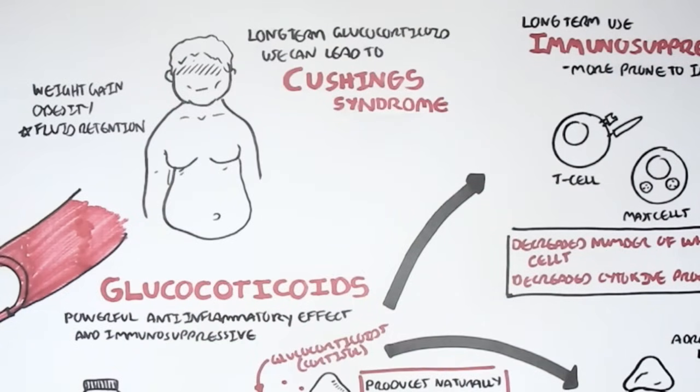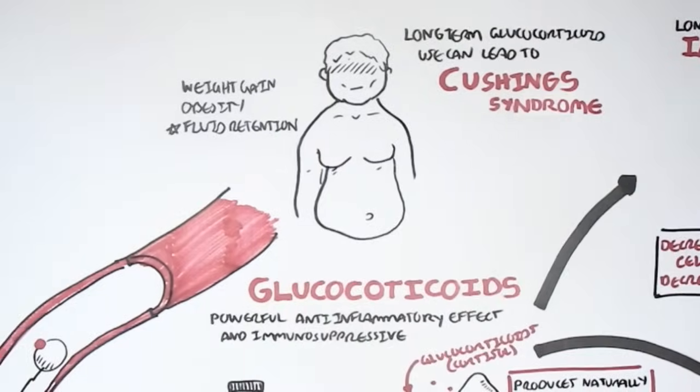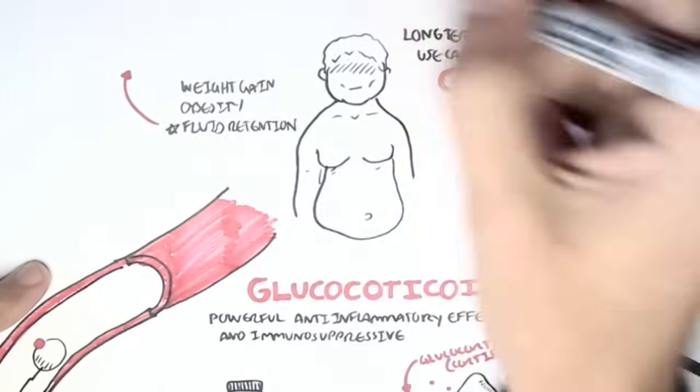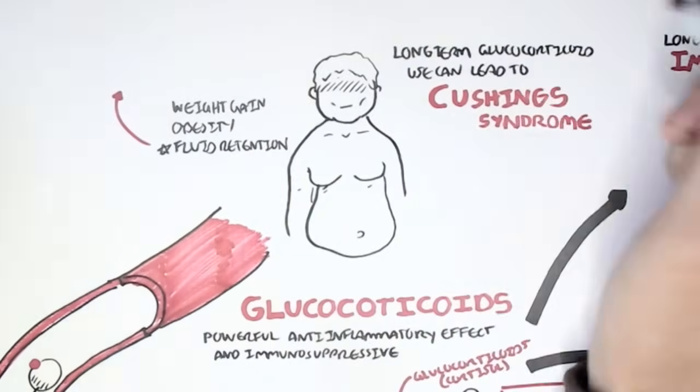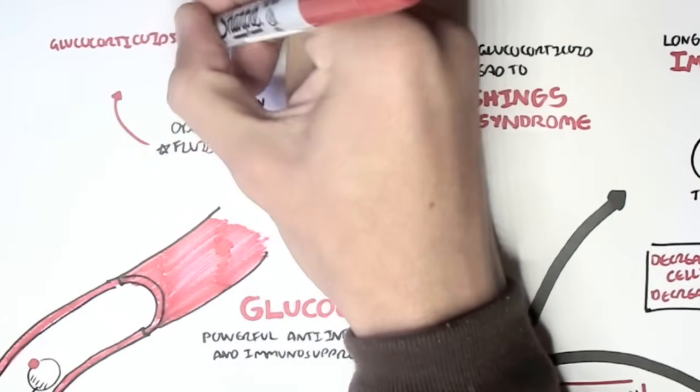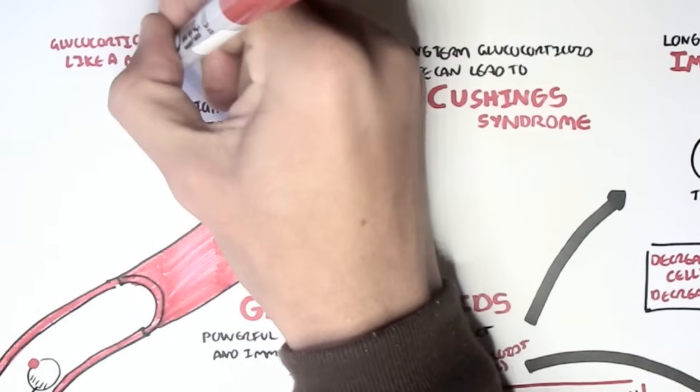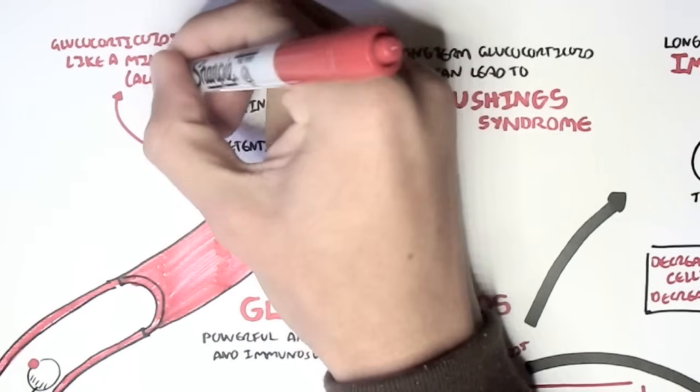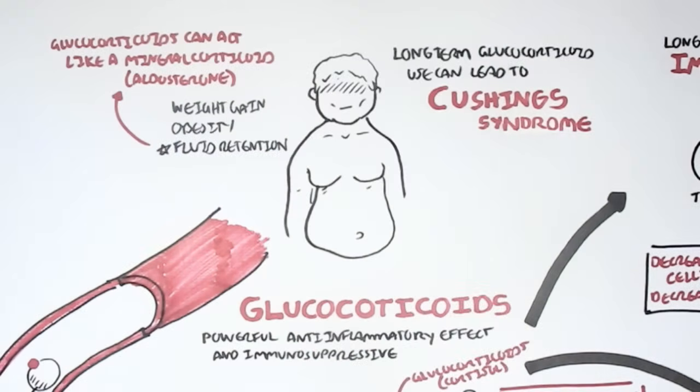And I'm highlighting fluid retention because the synthetically made glucocorticoids, such as hydrocortisone and prednisone, they also act sometimes or slightly like mineralocorticoids. An example of a mineralocorticoid is aldosterone. And aldosterone causes fluid retention, and this is why we see fluid retention in the use of glucocorticoids.